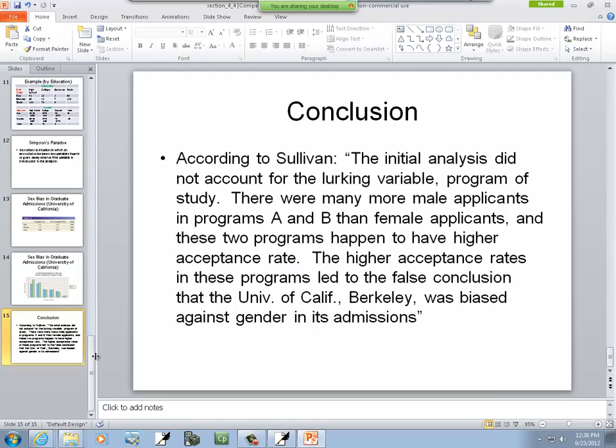And here's how Sullivan relates it. And this is verbatim out of the book. I thought Sullivan did an excellent job of summing it up. The initial analysis did not account for the lurking variable program of study. There were many more male applicants in programs A and B than female applicants. And these two programs happen to have higher acceptance rates. The higher acceptance rates in these programs led to the false conclusion that the University of California, Berkeley, was biased against gender in its admissions.